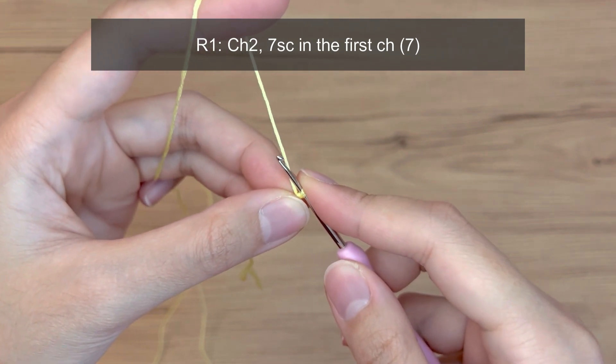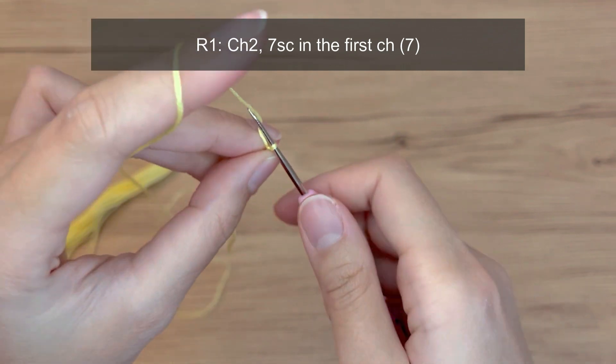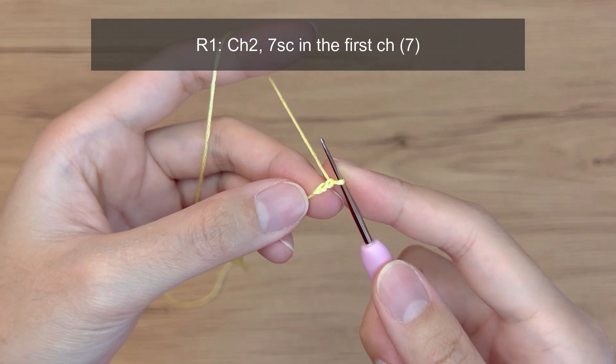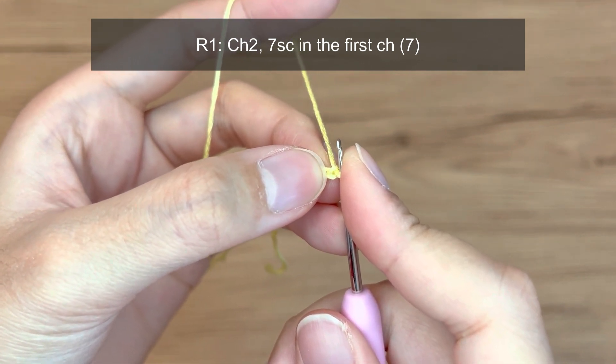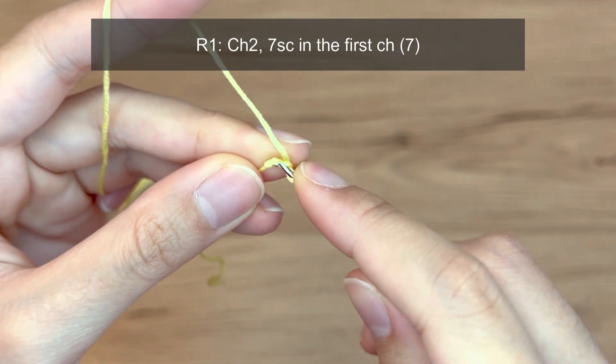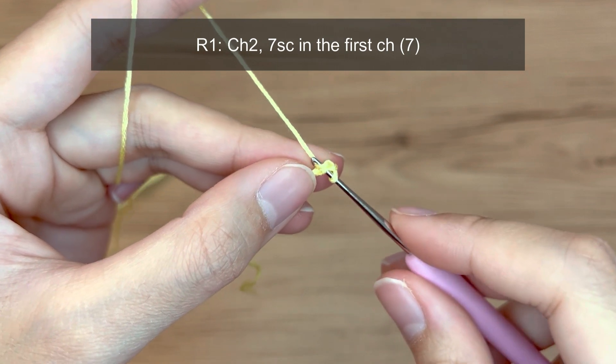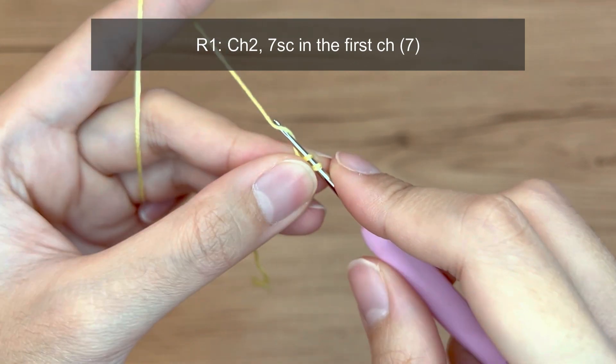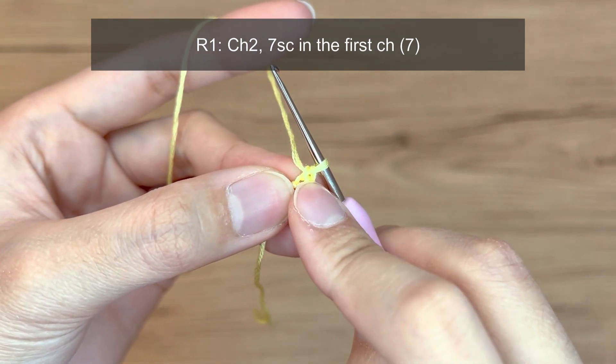You can see now that the loop is a lot smaller so this would be the starting point for us. Next, let's chain two times. So yarn over hook and then pull through the loop. There's one chain, yarn over hook again and then pull through the next. So this is two chain. Now that we have the two chains, let's make seven single crochet into that very first chain. This one. The chain next to hook is called a second chain. So in the first, let's insert our hook into that. And to make a single crochet, you're going to put your yarn over the hook and then pull through that loop. Notice how right now we have the two loops. Yarn over hook again and then pull through both loops. One, two.